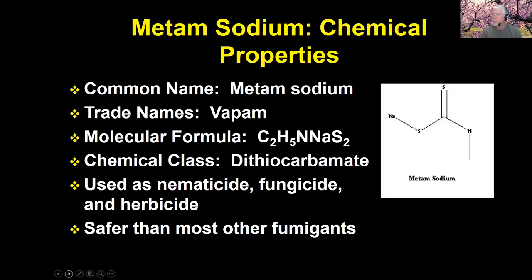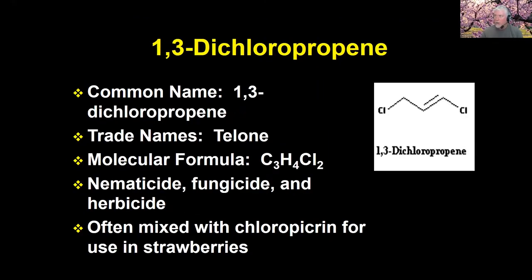So what do we have available? Metam sodium, called VAPAM or similar products such as K-PAM, is one of the critical older materials we still utilize. It's a good fungicide, though not as strong as a nematicide or herbicide. But especially in combination with other chemicals, it makes for nice fungicidal activity. It is dangerous, though safer than most other fumigants. 1,3-dichloropropene, found in Telone, Telone C35, or various formulations such as Pic-Clor, is also utilized for strawberries.